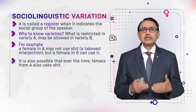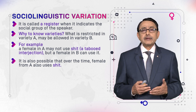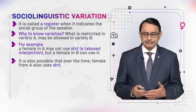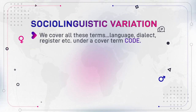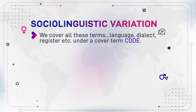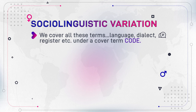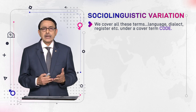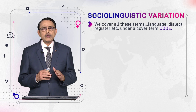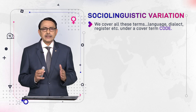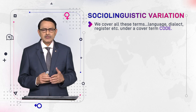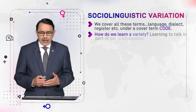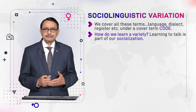It is quite likely that over time, in variety A where it is currently unacceptable, it may become appropriate. So this language variation is helpful in knowing the relationship between gender and language. We cover all these terms — language, variety, dialect, and register — under an umbrella term called code, which is a neutral term that may refer to any of these aspects of language.